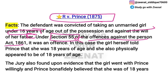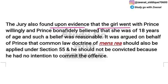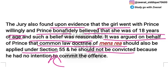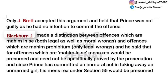The girl told Prince that she was 18 years old, and physically she appeared to be 18 years old. The jury found that Prince took the girl away with her consent. Prince believed in good faith that she was 18 years old, and this belief was reasonable.